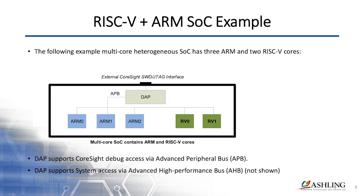RISC-V in particular is coming in at the low end — it's kind of replacing microcontrollers in SOCs as opposed to at the high end. This slide gives you an overview of a reasonably typical SOC. You have a number of ARM cores here, and over here on the right you have a couple of RISC-V cores. In this example, the ARM cores would be used to do the heavy lifting — the application, the video, the machine learning, the AI — whereas the RISC-V cores would be sort of like microcontrollers.